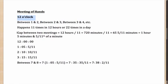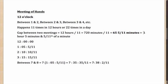The next question is: what is the gap between any two consecutive meetings? Well, 11 meetings in 12 hours means 1 meeting in 12/11 hours, or 720/11 minutes, which effectively comes out as 65 and 5/11 minutes — which you can also express as 1 hour, 5 minutes, and 5/11 of a minute.